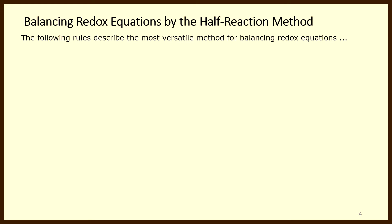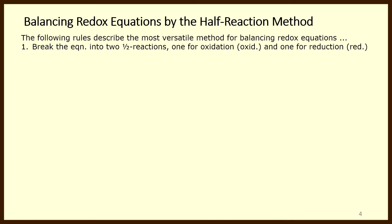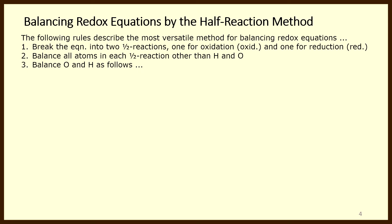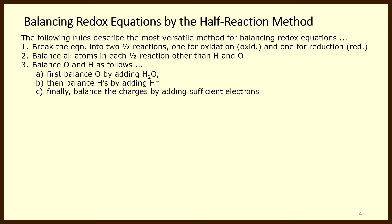We're next going to look at a set of rules for balancing redox equations by what is called the half-reaction method. We begin by breaking the equation into two half-reactions — one for oxidation and one for reduction. Our second step is to balance all the atoms in each half-reaction other than hydrogen and oxygen. Then we balance oxygen by adding water (H2O), and balance hydrogens by adding H+. We balance charges by adding sufficient electrons. I'll explain the rest as we go through some examples.